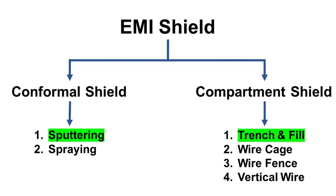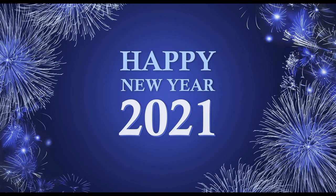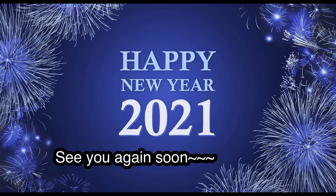In summary, there are two methods for conformal shield — sputtering and spraying — and most cases use sputtering. There are four methods for compartment shield — trench and fill, wire cage, wire fence, and vertical wire — and most cases use trench and fill. Today we talked about EMI shield. I hope this helps you understand basic EMI shield technology. Happy New Year and see you again soon. Bye bye.